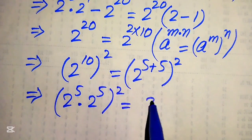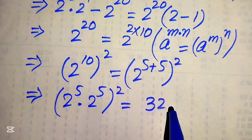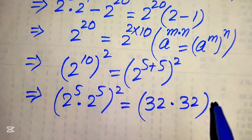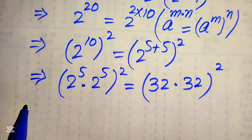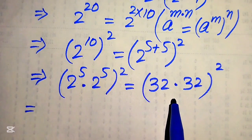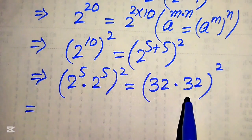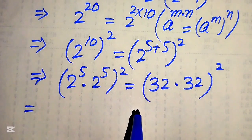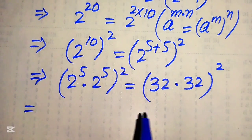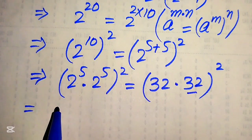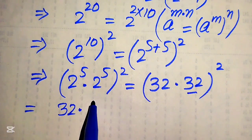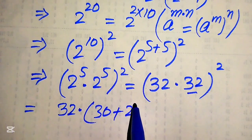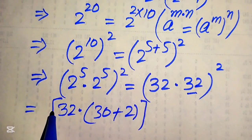This gives us 2 to the power of 5 multiplied by 2 to the power of 5, whole squared. We know that 2 to the power of 5 equals 32, so this becomes 32 multiplied by 32, whole squared. Now we first multiply 32 times 32. We break this as 32 multiplied by 32, written as 32 multiplied by 30 plus 2, whole squared.